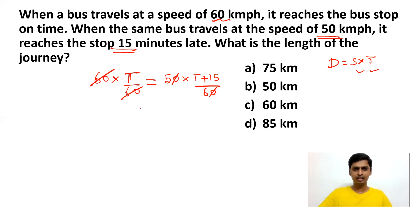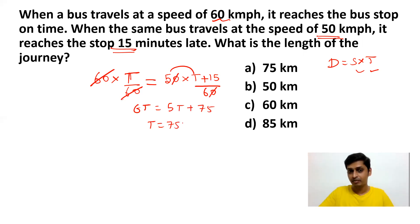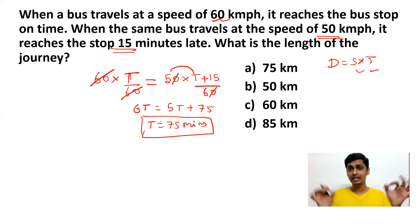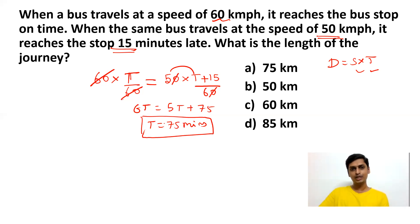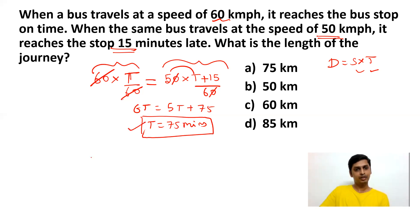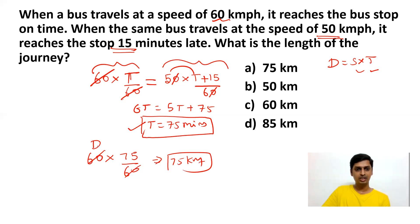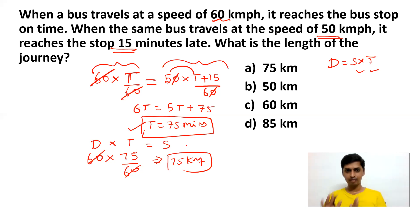Equating: 60 × t/60 = 50 × (t + 15)/60. Cancel 60 denominators: 6t = 5(t + 15) = 5t + 75. So t = 75 minutes. The bus usually covers the distance in 75 minutes. To find distance: 60 × (75/60) = 75 km. You get the same answer substituting on either side. The answer for this question is 75 km.